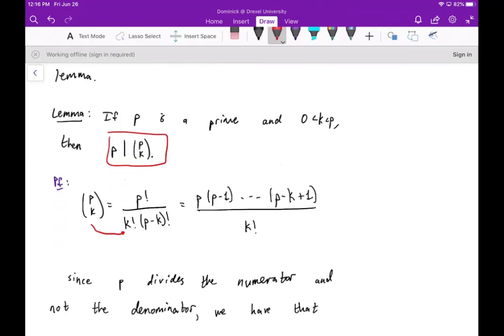And of course, we can simplify this by canceling some of the factorials here. And the top will eventually become P times P minus one, all the way down to P minus K plus one, because everything else will cancel out with P minus K factorial. And then the bottom, we're just left with K factorial.